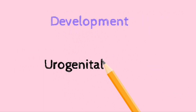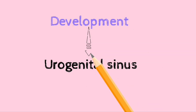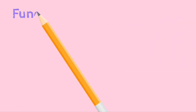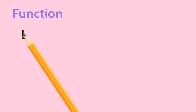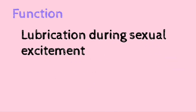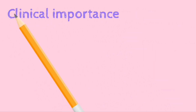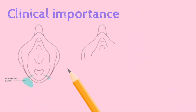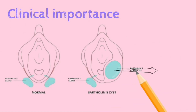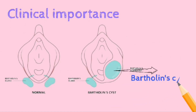The Bartholin gland is homologous to the bulbourethral gland, also known as Cowper's gland, in the male. It is developed from the urogenital sinus. The function of the Bartholin gland is that it helps in lubrication during sexual excitement.